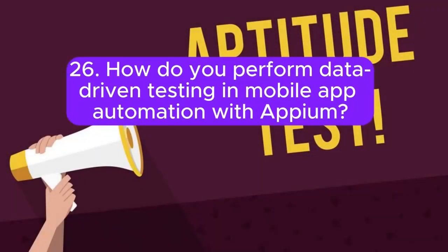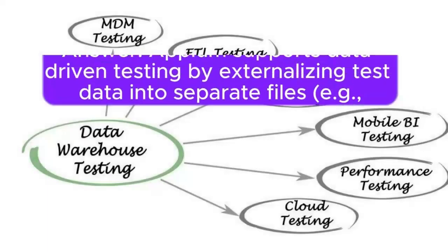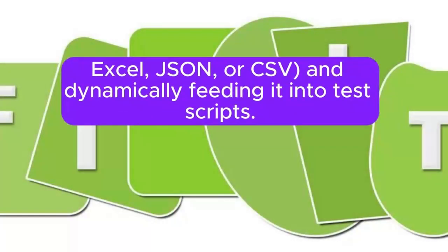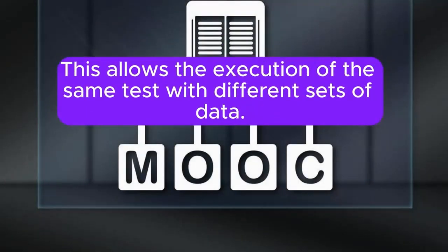26. How do you perform data-driven testing in mobile app automation with Appium? Appium supports data-driven testing by externalizing test data into separate files, for example Excel, JSON, or CSV, and dynamically feeding it into test scripts. This allows the execution of the same test with different sets of data.